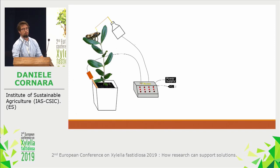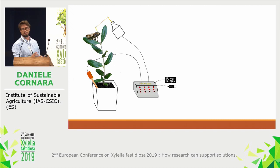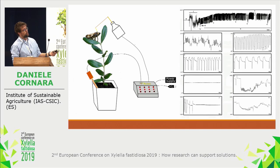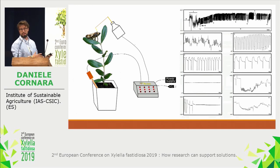EPG, electrical penetration graph, is a tool by which we make the insect and the plant part of an electrical circuit. Biopotentials and electrical resistances transform the constantly applied electrical input into a variable voltage output that is graphed as a waveform. Each waveform has a precise biological meaning.